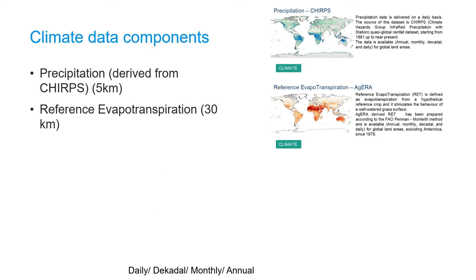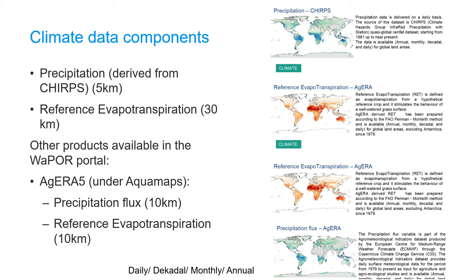WAPOR version 3 contains two different climate data components: precipitation and reference evapotranspiration. The precipitation data is derived from the CHIRPS dataset with some gap filling done and is available at 5 km resolution. The reference ET data of WAPOR version 3 has a resolution of 30 km and is derived from GEOS-5 for near real-time processing and AGERA5 for the final product. Other similar data products available within the WAPOR portal include precipitation and reference evaporation derived from AGERA5, located under the Aquamaps tab. Both datasets have a spatial resolution of 10 km and are available at daily, decadal, monthly, and annual temporal resolutions.